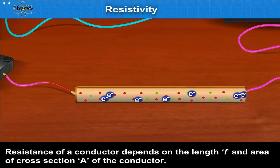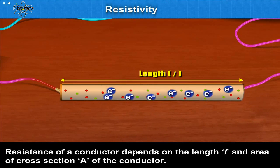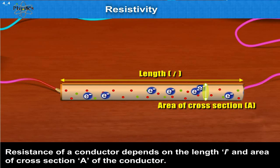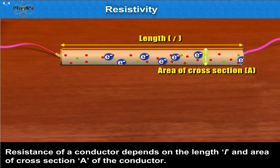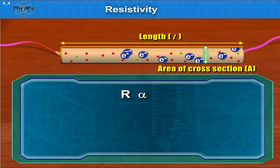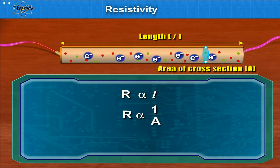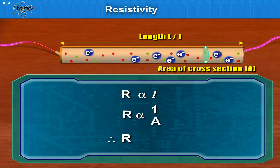Resistance of a conductor depends on the length L and area of cross section A of the conductor. R is directly proportional to L and R is inversely proportional to A. Therefore, R is proportional to L upon A.